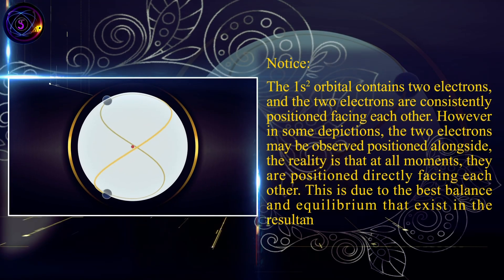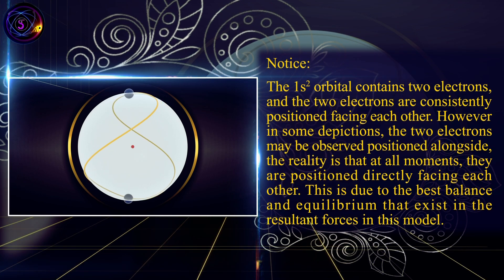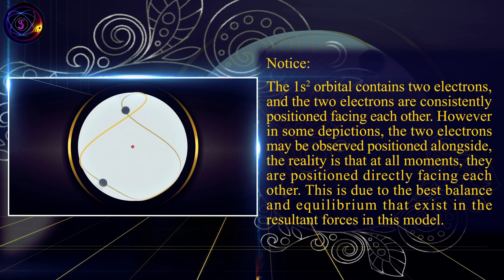Notice, the 1s2 orbital contains two electrons, and the two electrons are consistently positioned facing each other.